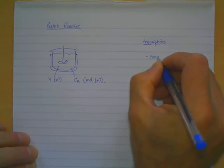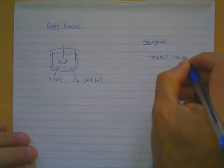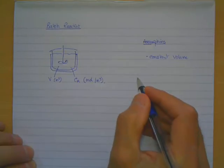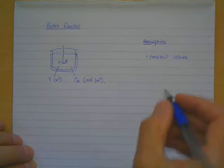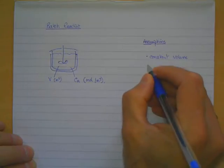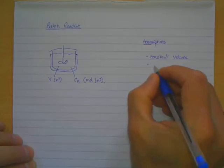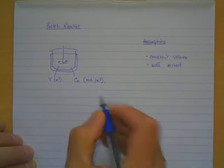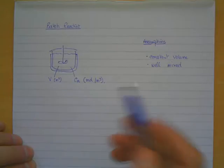The typical batch reactor has the materials charged at time t equals zero and thereafter there's no addition, no withdrawal. So the volume is approximately constant as long as the density doesn't vary, and we're assuming it doesn't. We're also going to assume that the tank is well mixed so that the temperature and the concentration at any point in the reactor is the same.